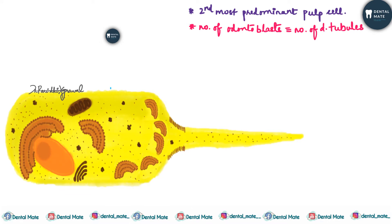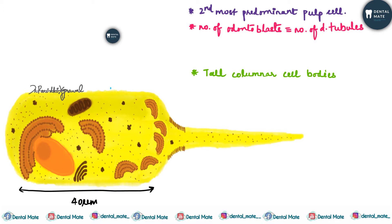This is a diagrammatic representation of an odontoblast cell. These are basically present near the pulpal predentine. Cell bodies touch each other, and the cell cytoplasm is devoid of organelles. They have tall columnar cell bodies.